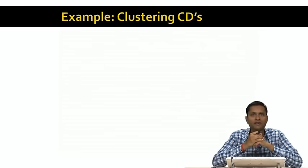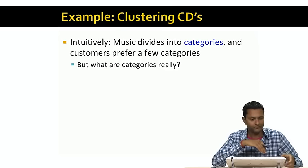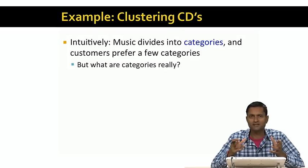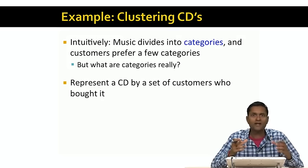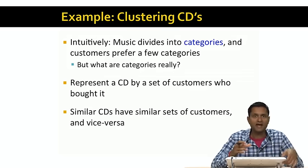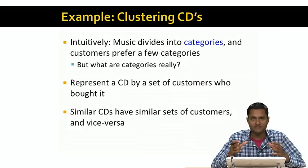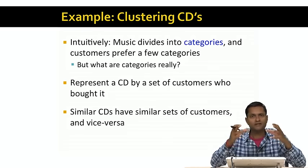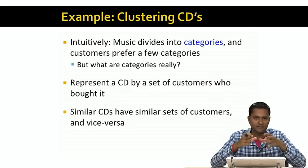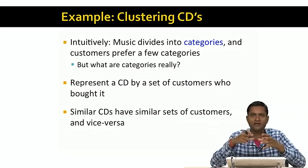As a second example, let's look at clustering CDs. Intuitively, music divides into categories, and customers prefer a few categories or genres of music. We'd like to represent a CD by the set of customers who bought it, and say that similar CDs have similar sets of customers. CDs naturally group or cluster together based on the customers they have. For example, there might be a group of CDs that are classical music, with a group of customers who are classical music aficionados, and another group of punk rock CDs bought by a different set of people.